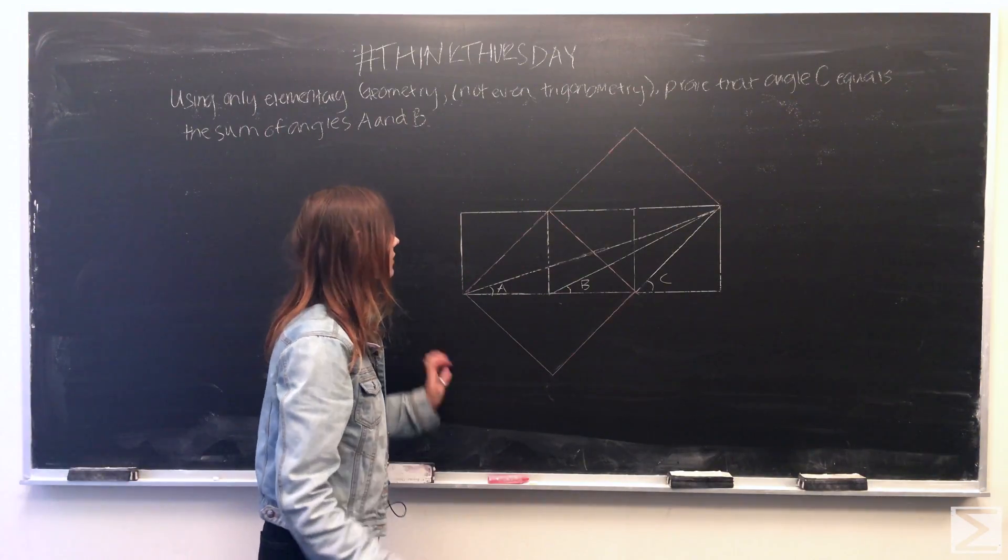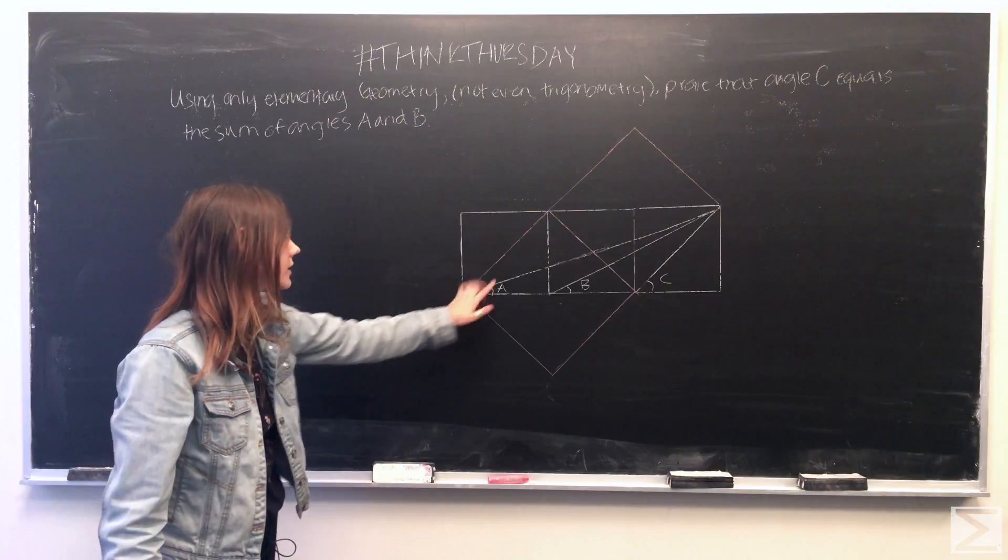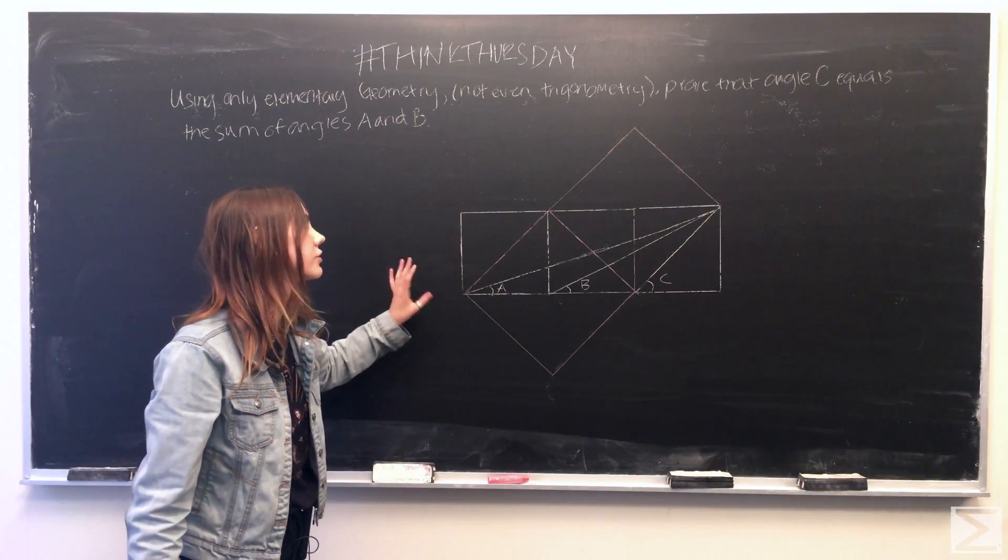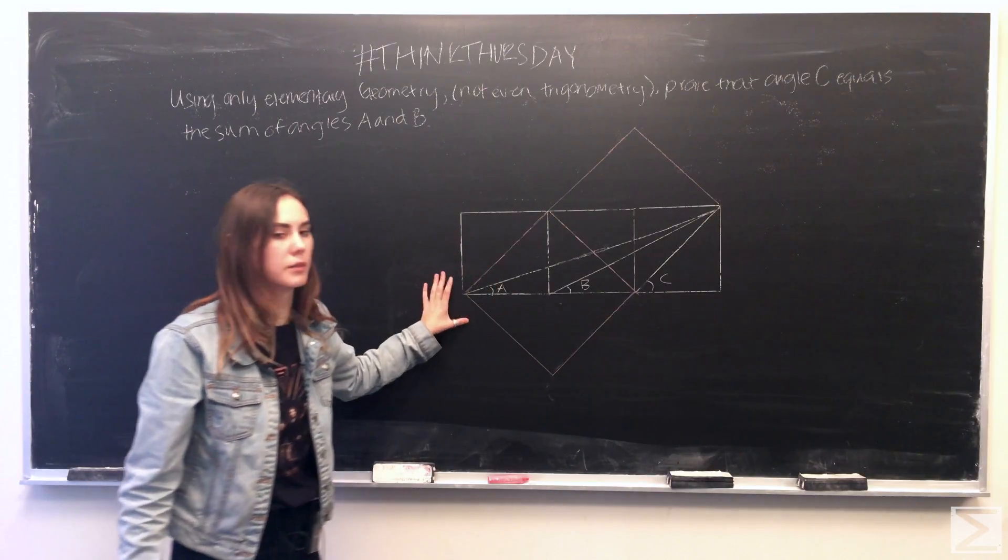So using the diagonals of each of these small three squares we've constructed two larger squares, squares in pink here.